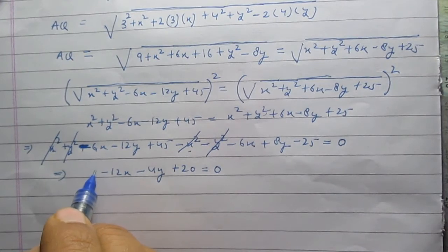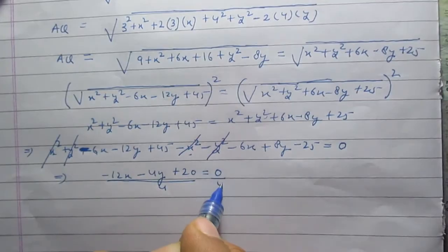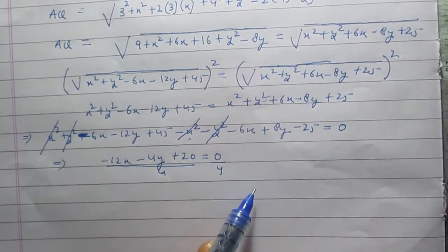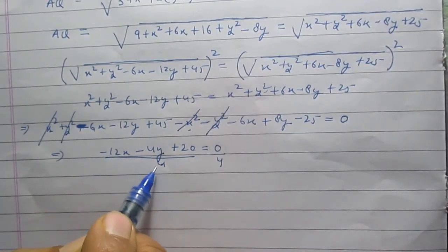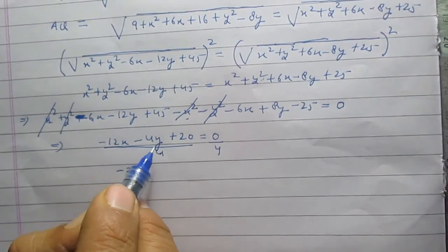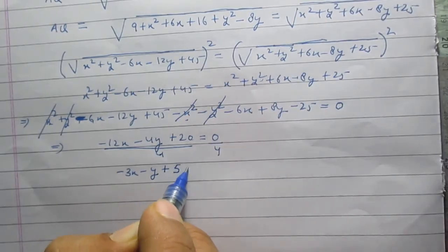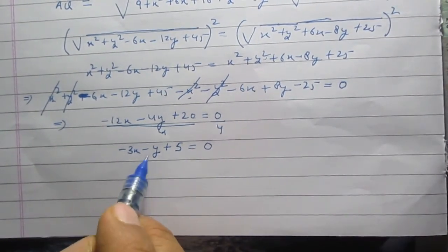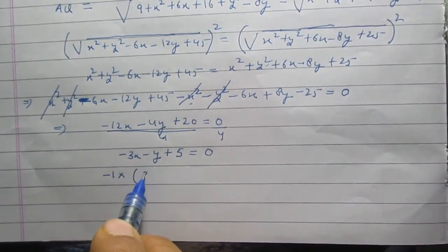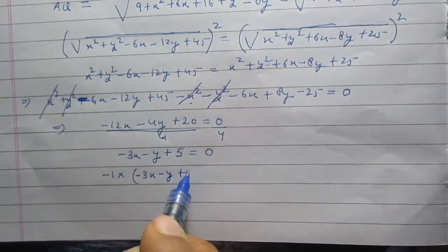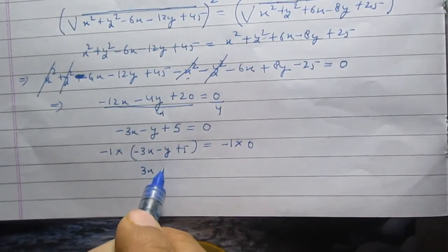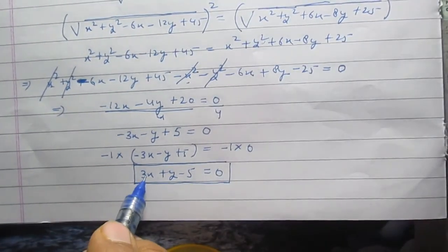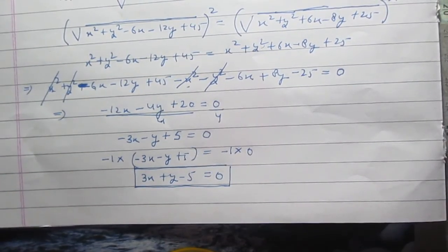We can divide both sides by 4, since 4 is a factor of all three terms, and 0 divided by 4 is 0. So we get minus 3x minus y plus 5 equals 0. Multiplying both sides by minus 1, we get 3x plus y minus 5 equals 0. This is the relation between the variables x and y: 3x plus y minus 5 equals 0.